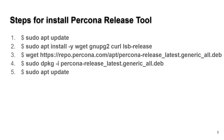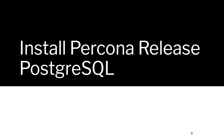From there, we need to install some packages using sudo apt install -y: wget, gnupg2 (GNU Privacy Guard), curl, and lsb-release. Then we go out to the Percona repo and get the Percona release Debian file. We install that using dpkg -i, and then once again we run sudo apt update. If you've installed MySQL from the package manager, you'll remember how this works.